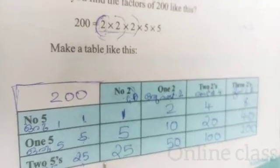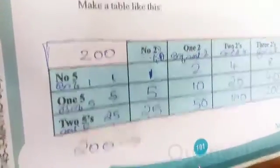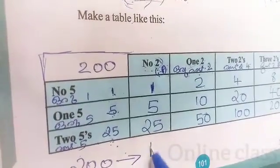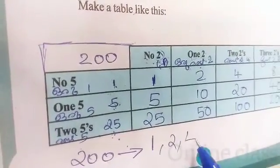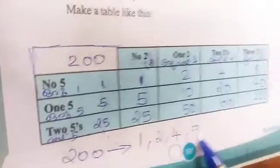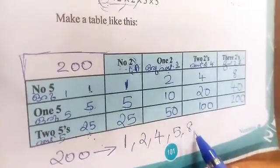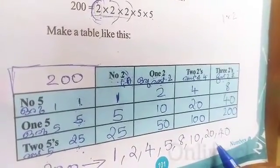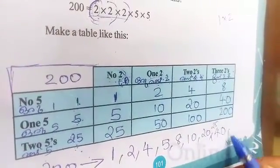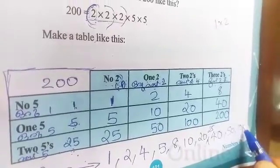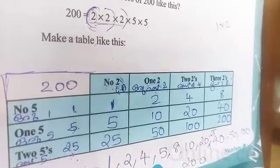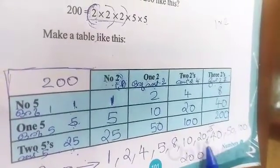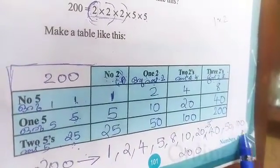Let's write these factors. 1, 2, 4, 5, 8, 10, 20. 40. That is 20. The factors are 1, 2, 4, 5, 8, 10, 20, 25, 40, 50, 100, 200.